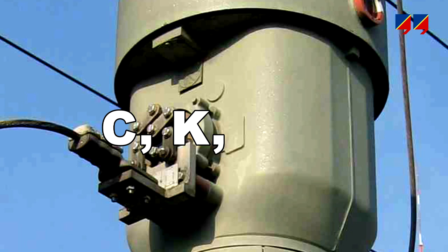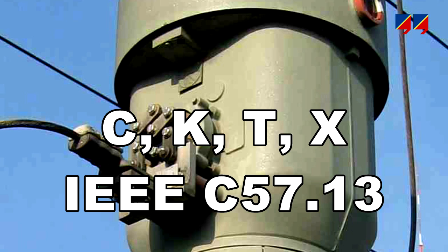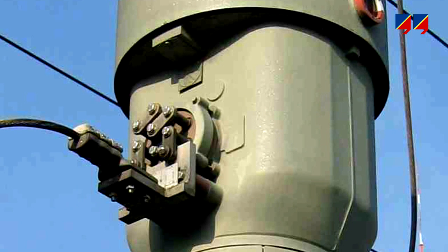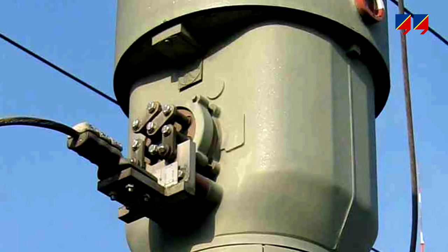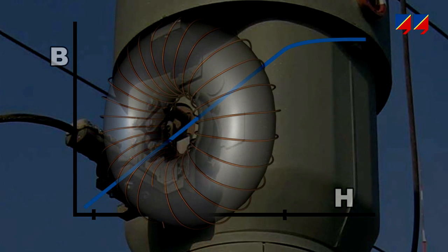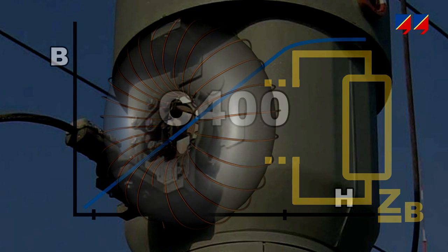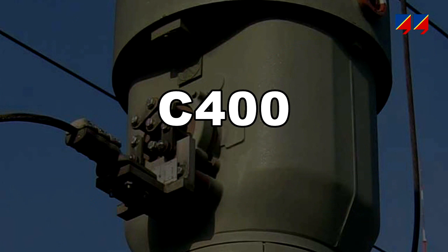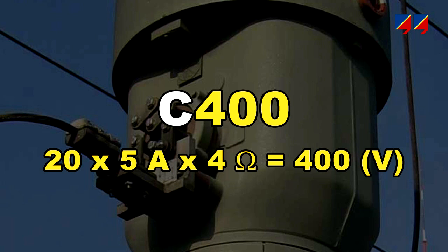For C, K, T, and X classes, according to IEEE C57.13, a similar approach is used by calculating the terminal voltage from the CT's excitation curve and considering its winding resistance and external burden. For example, protection class C400 means that for a burden of 4 ohms and at 20 times the rated current, the CT must not produce an error of more than 10%.